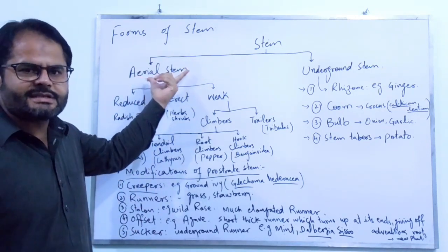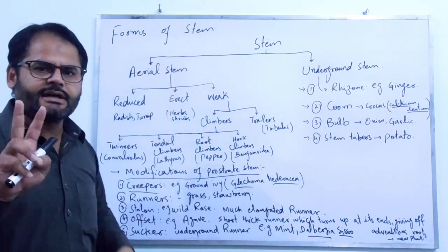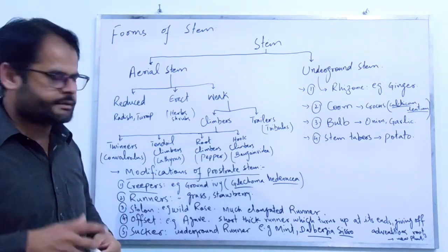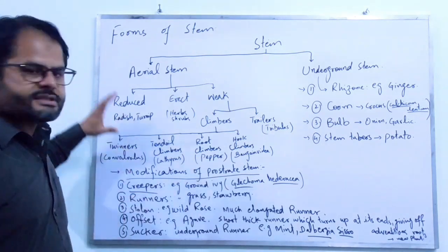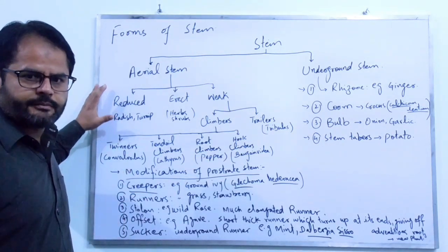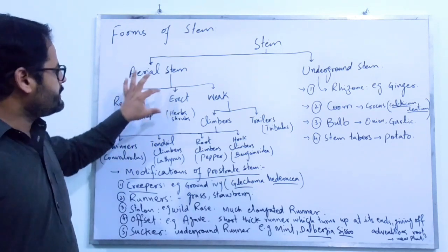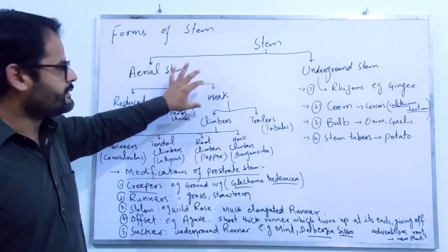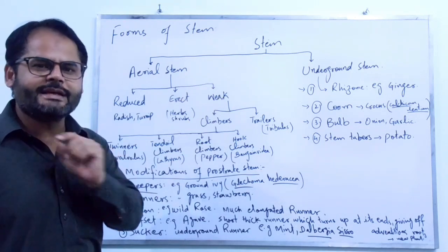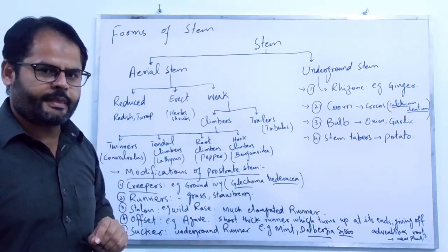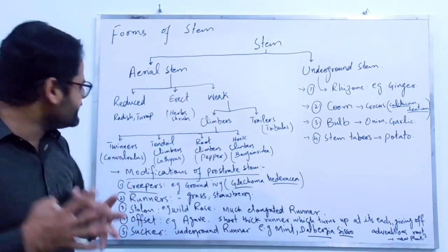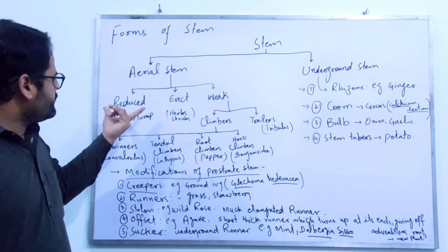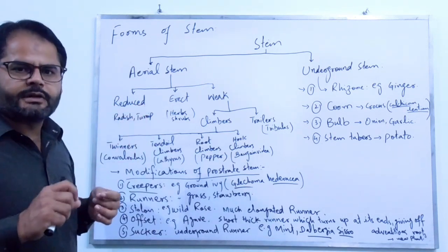The aerial stem is divided into three main categories: the first one is called reduced stem, the second one is called erect stem, and the third one is called weak stem.